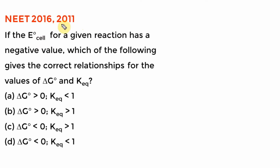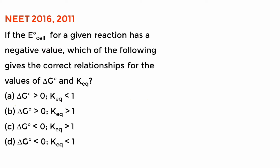Here is another question that has come two times in NEET. If the E° cell of the reaction is given and E° is negative, then what about ΔG and K? We know E° has to be positive for a spontaneous reaction. For a spontaneous reaction ΔG has to be negative and K has to be greater than 1. Here E° is negative, so ΔG is positive and K is less than 1. Option is A. You don't have to solve anything — it's just concept-based.